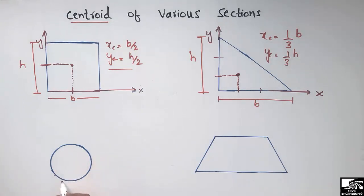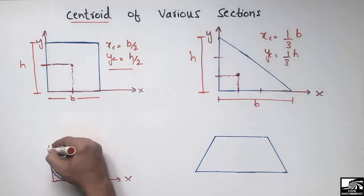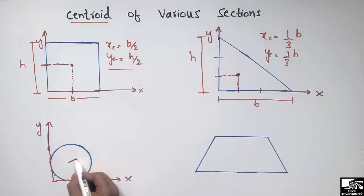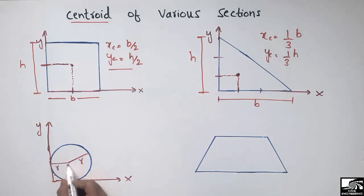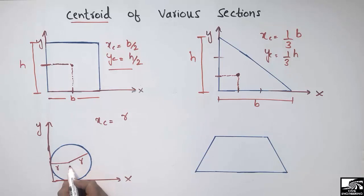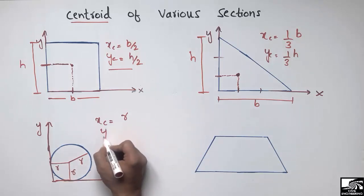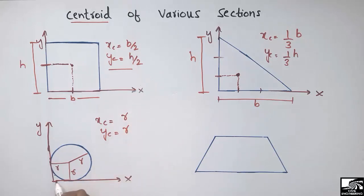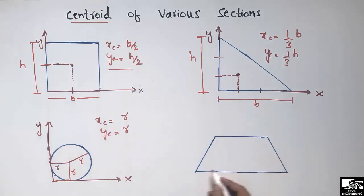Now let's find the centroid of a circle. It is the easiest compared to the other shapes because its form is symmetrical. Drawing the x-axis and y-axis of the circle: the circle is represented by its radius R, which is constant throughout the entire geometric object. With respect to the x-axis, the centroid is simply R, and with respect to the y-axis, it is also R. So the centroid of a circle is always at its radius, taking the origin at (0, 0).